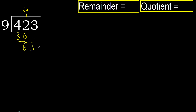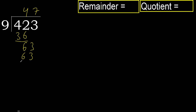63. 9 multiplied by 7 is 63, which is not greater. Subtract: 63 minus 63 equals 0. Next.